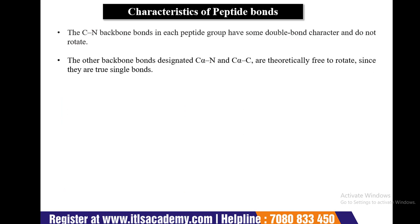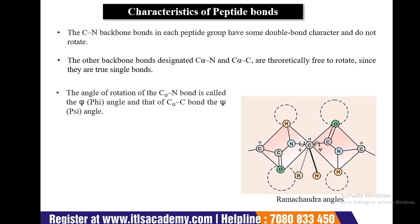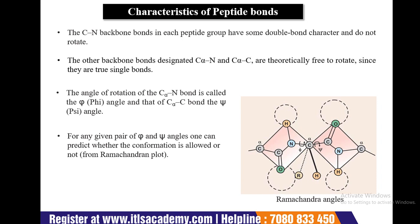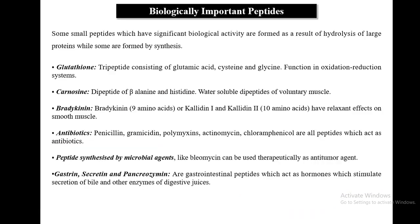Characteristics of the peptide bond: the carbon-nitrogen backbone bonds in each peptide group have some double bond character and do not rotate. The other backbone bonds — designated as C-alpha-N (phi angle) and C-alpha-C (psi angle) — are theoretically free to rotate as they are single bonds. These are the Ramachandran angles: for any given pair of phi and psi angles, one can predict whether a conformation is allowed or not — this is the property of the Ramachandran plot.